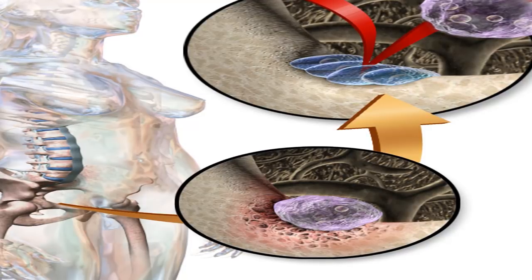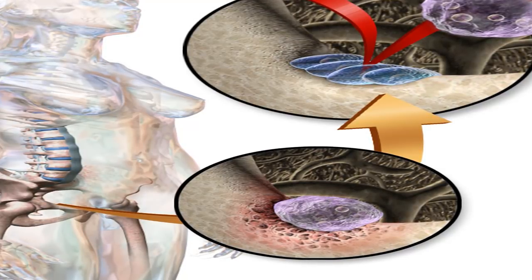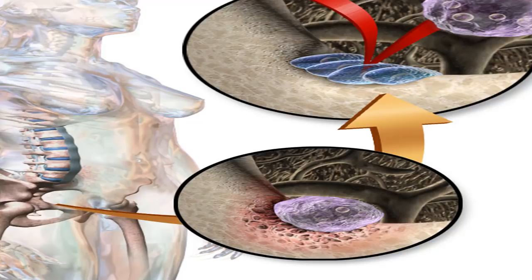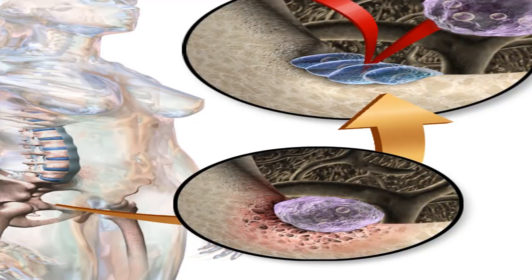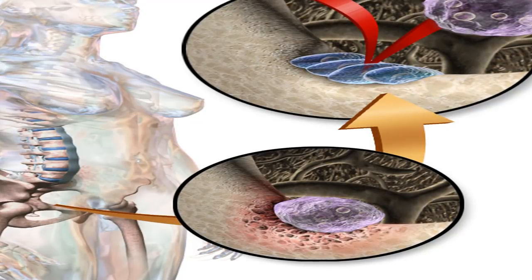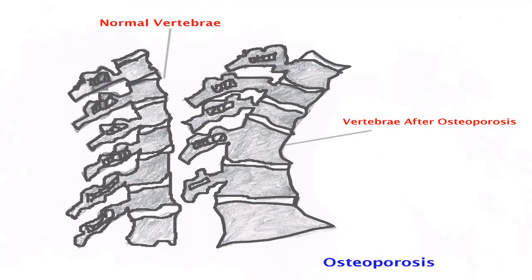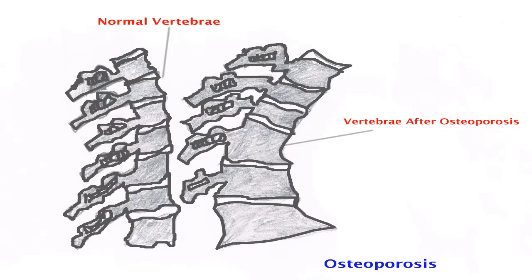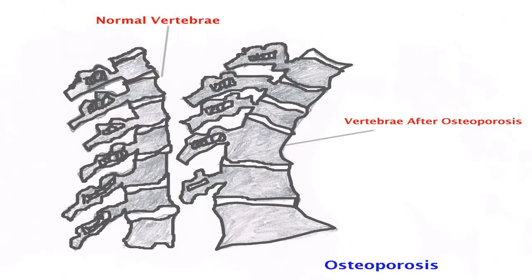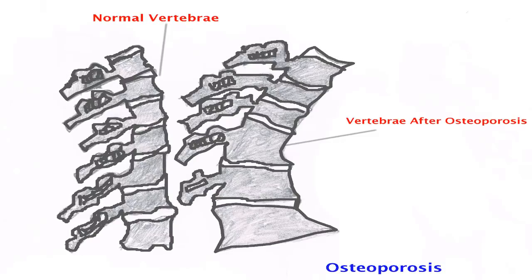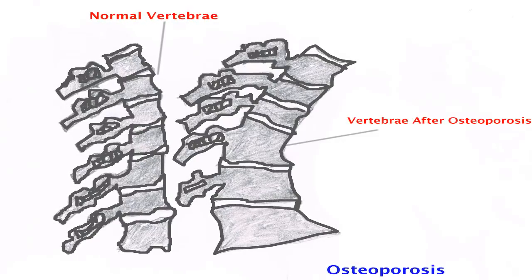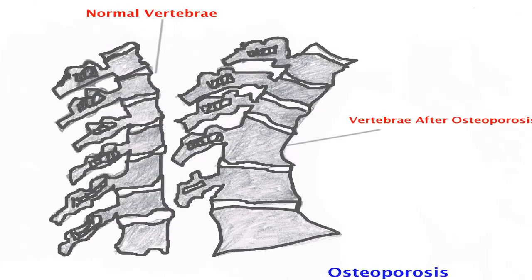Treatment and prevention: there isn't a cure for osteoporosis, so treatment aims to slow the progression of the disease and manage symptoms. Bones need calcium to stay strong and healthy. Not getting enough calcium early on in life can lead to osteoporosis later on. Regardless of your age, calcium supplements can help strengthen your bones. Additionally, vitamin D can help your body absorb calcium. Be sure to check with your doctor about adding any supplements to your diet.